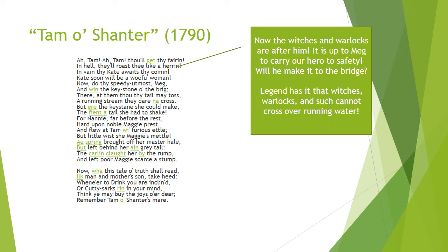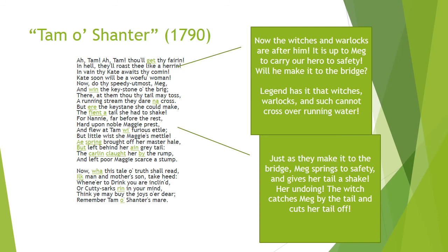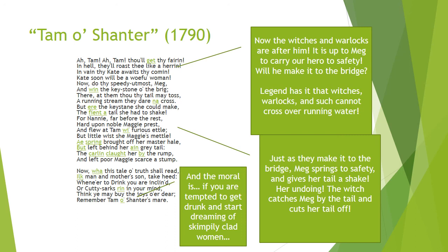It is up to Meg to carry our hero to safety. He has to make it to the bridge because, as legend says, witches, warlocks, and goblins cannot cross over running water. They get there and cross. As they spring to safety, Meg gives her tail a shake as if to say, 'Ha, so there, I made it!' But that's her undoing — a goblin catches Meg by her tail and cuts it off. Very sad: poor Maggie's left with just a stump. At the end we have the moral of the story: 'Now who this tale of truth shall read, each man and mother's son take heed. Whene'er to drink you are inclined, or cutty sarks run in your mind, think you may buy the joys too dear — remember Tam O'Shanter's mare.' If you're tempted to get drunk and start dreaming of skimpily clad women, just remember the poor tail his mare lost.